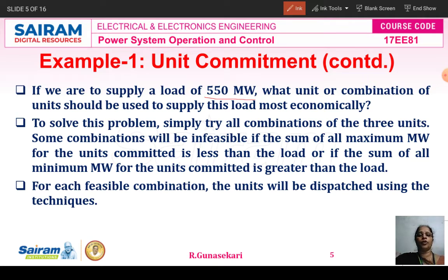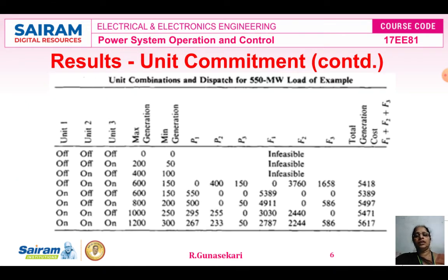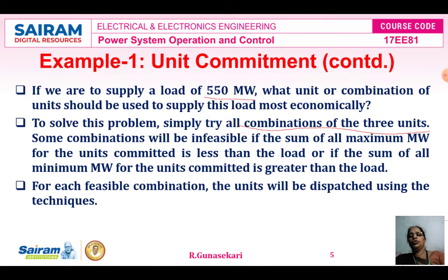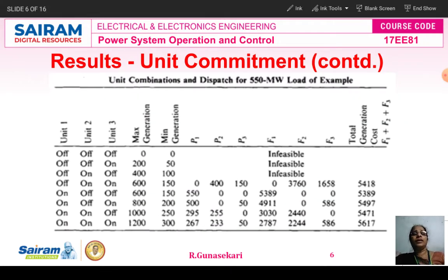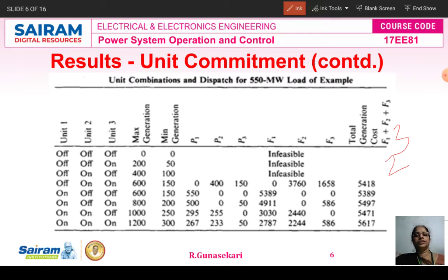To solve this problem, we first prepare all possible combinations of the three units. The formula is 2 power n — with 3 units, that gives 2^3 = 8 combinations, as studied in logic design. The 8 binary combinations are: 0,0,0 / 0,0,1 / 0,1,0 / 0,1,1 / 1,0,0 / 1,0,1 / 1,1,0 / and 1,1,1. We write the respective unit columns for Unit 1, Unit 2, and Unit 3 showing maximum and minimum generation for each combination.